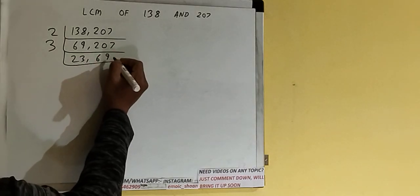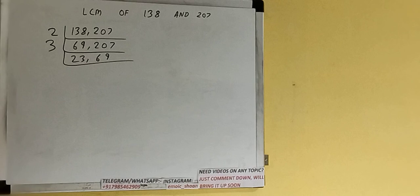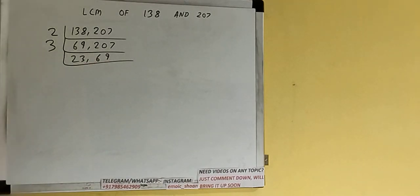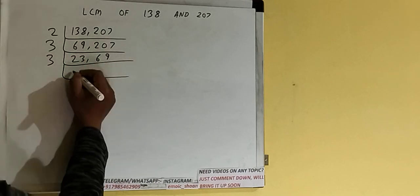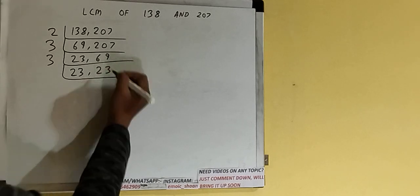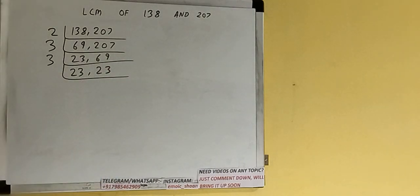Now again, if we check if any numbers are divisible by 3, the second number is. So divide only the second number by 3, and copy the first number down. The second number on dividing by 3 will become 23.